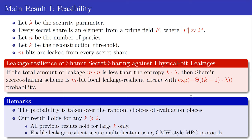The total amount of leakage is m times N, since there are N parties each leaking m bits. The total entropy is k times lambda, since each share has lambda bits and we need exactly k shares to reconstruct. The probability is taken over the random choices of evaluation points, so for most evaluation points the corresponding Shamir secret sharing scheme is leakage resilient. However, for some evaluation points it is not. Our result holds for any reconstruction threshold k greater than or equal to 2, enabling leakage resilient secure multi-party computations using GMW.